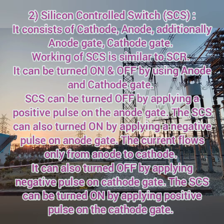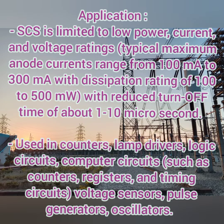The second type is the Silicon Controlled Switch (SCS). It consists of a cathode, anode, and additionally an anode gate and cathode gate. The working of SCS is similar to SCR, but it can be turned on and off by using both the anode and cathode gate. For turning off, the cathode gate is also used. The SCS can be turned off by applying a positive pulse on the anode gate, and turned on by applying a negative pulse on the anode gate. The same applies vice versa for the cathode gate with opposite polarities.